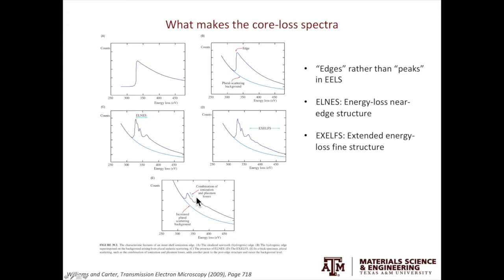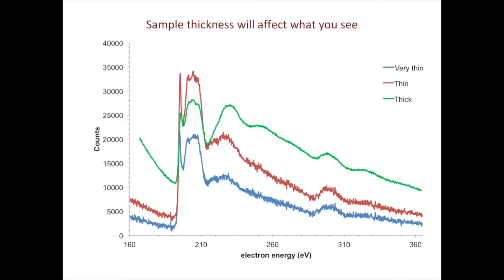And finally, we can do quantification. I will use an example from my research. What we are looking at is the boron K edge. All the spectra here were taken from the same grain, but with different thickness values. The blue one is acquired from the thinnest region, the red one is taken from a thin region, and the green curve is taken from a thick region.